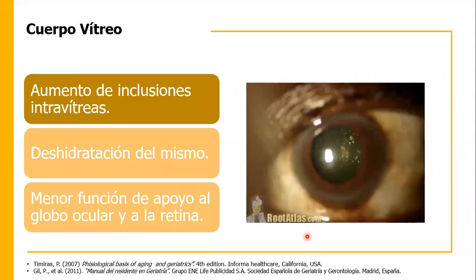El cuerpo vítreo va a tener como consecuencia un aumento de las inclusiones intravítreas, que también pueden ser de calcio, como en el caso de esta imagen que es hialosis asteroidea, que no son más que acumulaciones de calcio. Va a haber deshidratación del mismo y menor función de apoyo al globo ocular y a la retina. Sabemos que el vítreo da la forma al globo ocular, representando el 80% de su contenido.